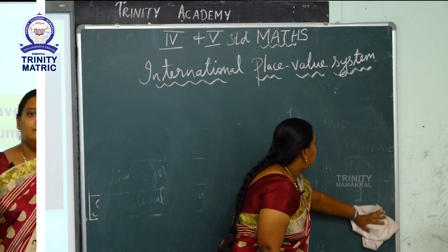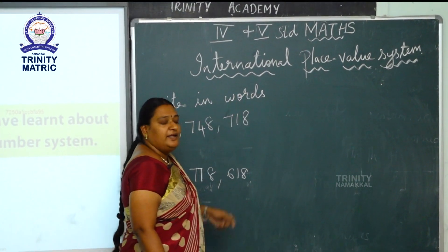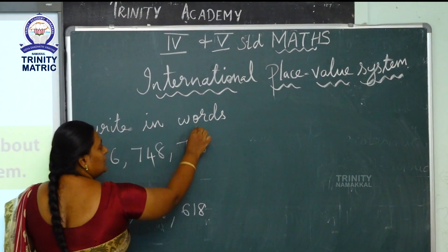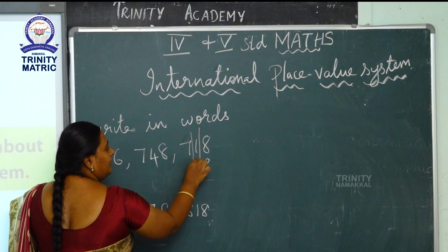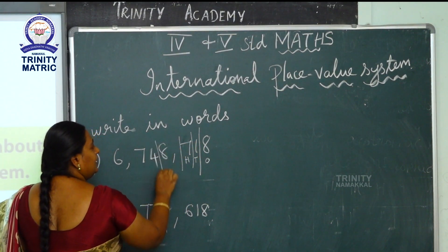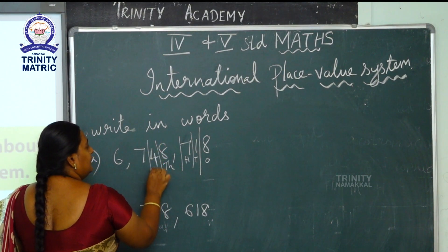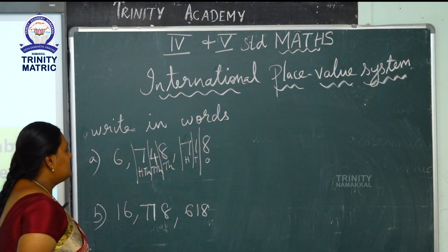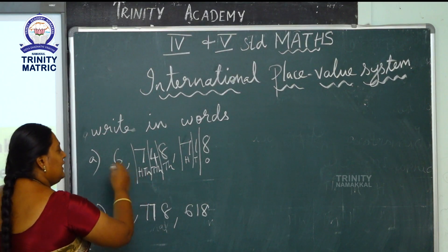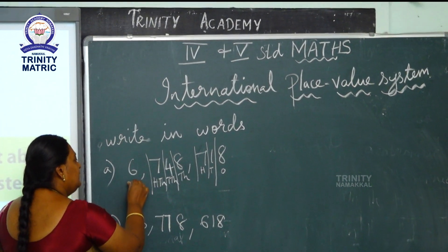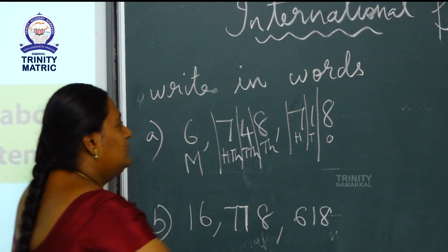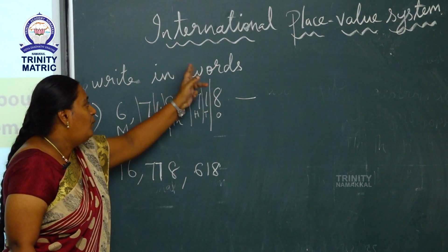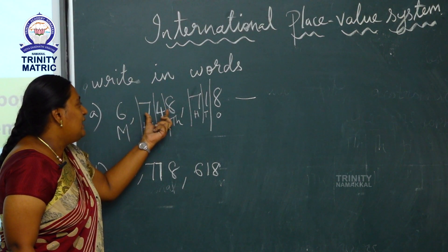Next we are going to see the number names for the international system — how to write number names in the international place value system. You follow this: first write ones, tens, hundreds, then thousands, ten thousands, then hundred thousands. In the Indian system we have lakh, but in the international system after ten thousand we have hundred thousand, then million. In this system the ones place has three digits, the thousands place has three digits, and the millions place also has three digits.